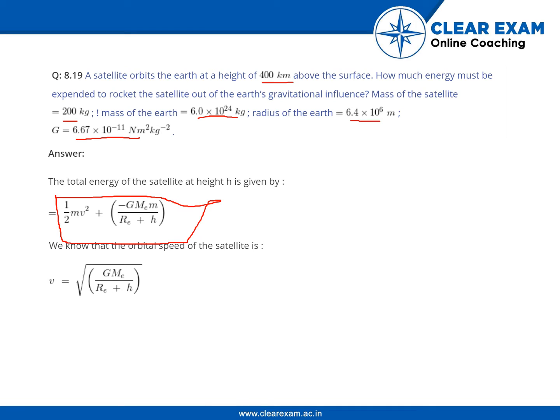We know that the orbital speed of the satellite is given as v equals the square root of GMₑ/(Rₑ + h).